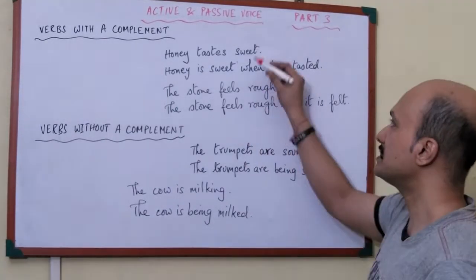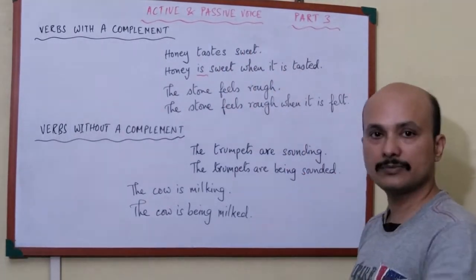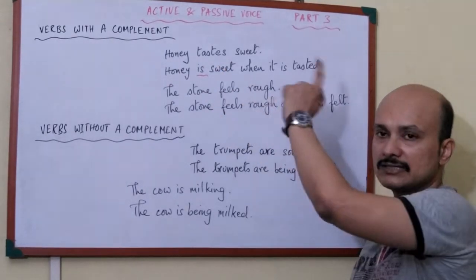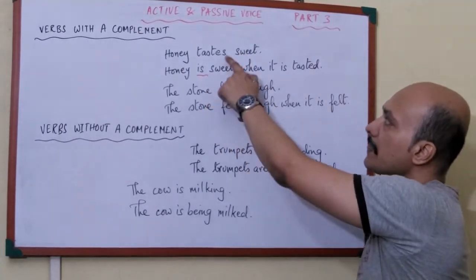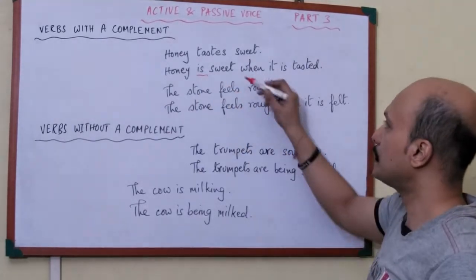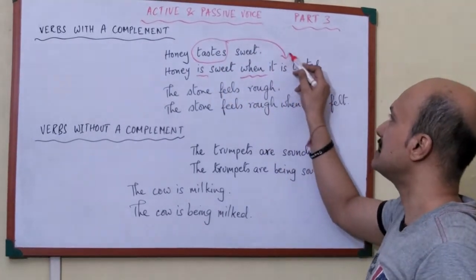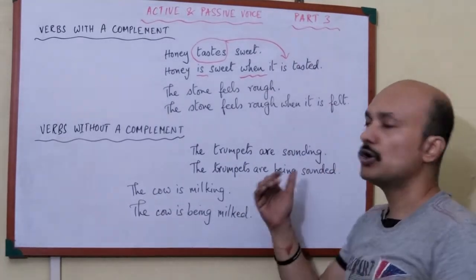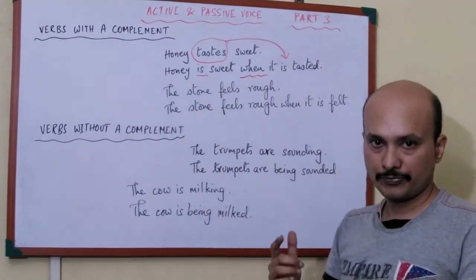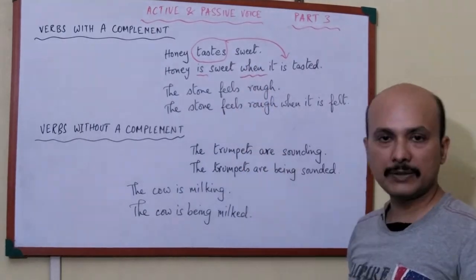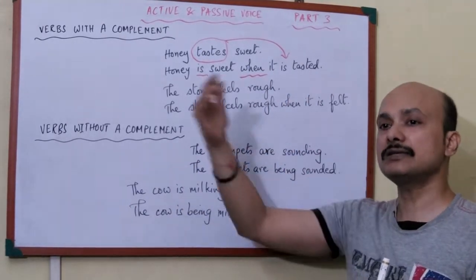For 'honey tastes sweet' — the verb 'tastes' is removed and we put in a simple present tense verb matching the original sentence: 'is'. Then we put in the clause word 'when', and 'tastes' moves over and becomes 'is tasted'. So 'honey tastes sweet' becomes 'honey is sweet when it is tasted'. You break down the complement into a separate clause part.